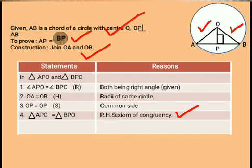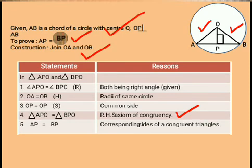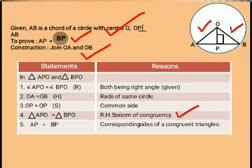Finally, we can say that side AP of triangle APO and side BP of triangle BPO are equal, being corresponding sides of congruent triangles. Hence it is proved that the perpendicular line OP drawn on chord AB bisects that chord AB into two equal halves, making AP equal to BP.